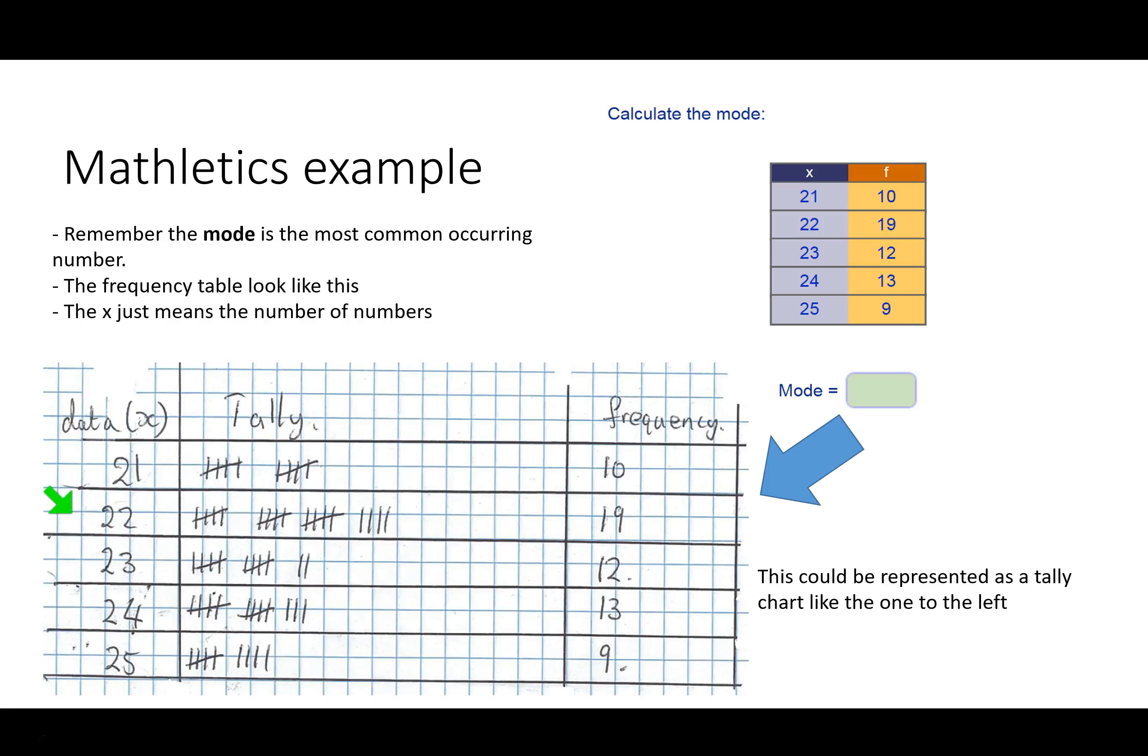So in this case the mode would be 22 because there is 19 lots of 22. I hope this helps. Cheers Jacob.